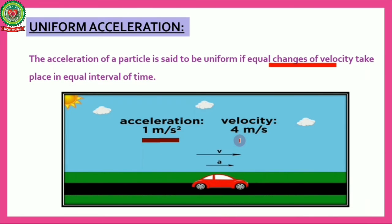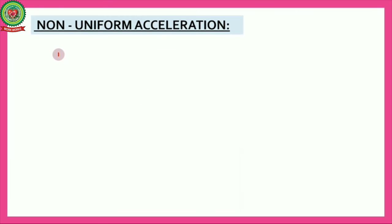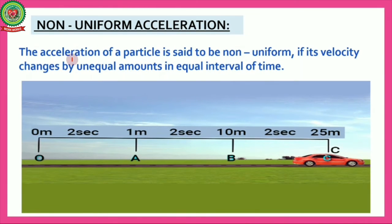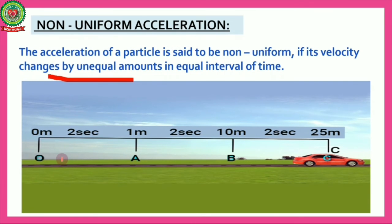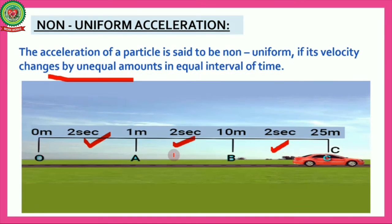Next is non-uniform acceleration. The acceleration of a particle is said to be non-uniform if its velocity changes by unequal amounts in equal intervals of time. For example, if a car covers 1 meter in the first 2 seconds and 10 meters in the next 2 seconds, its velocity changes by unequal amounts in equal intervals of time.